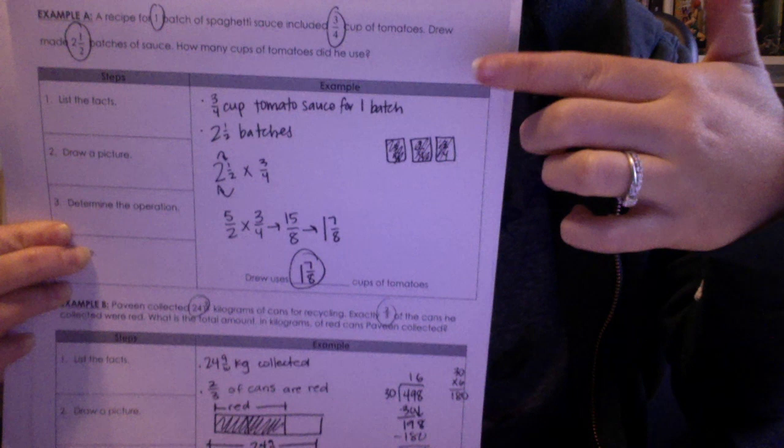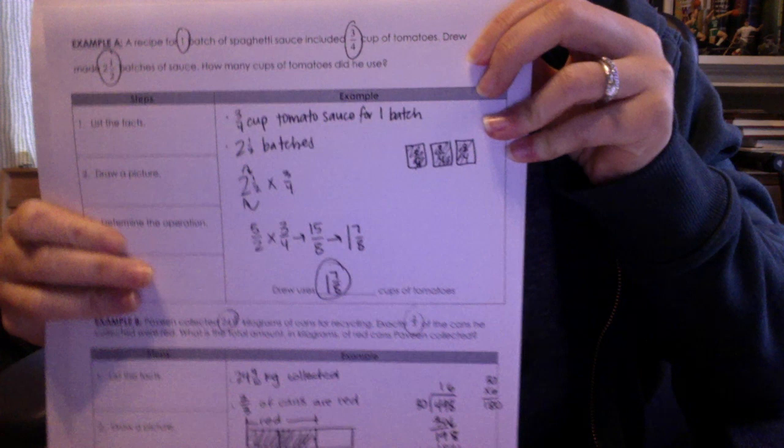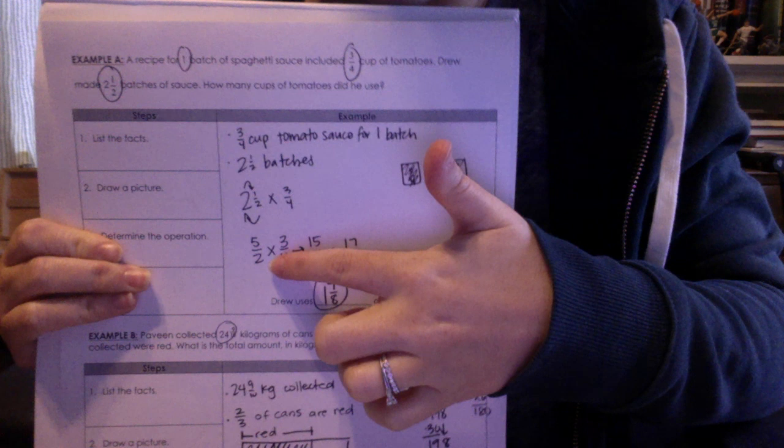So I drew a picture here of 2 and 1 half batches. Notice I only shaded in 2 and 1 half of these. Each full batch has 3 fourths of a cup. So that means that I'm going to need to multiply because there's equal groups here. So 2 and 1 half times 3 fourths. Remember to turn 2 and 1 half into an improper fraction, so it becomes 5 over 2. Then you can multiply straight across, and you should get 15 over 8.